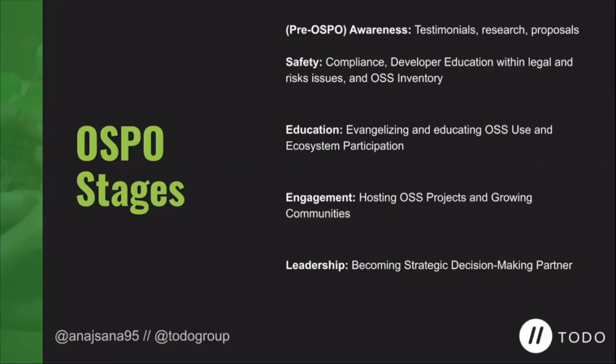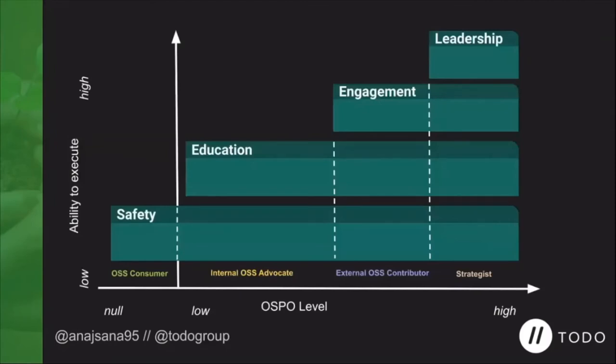Only when we have a safe and supportive environment might we drive more attention to broader engagement and find ways to host open source projects. Finally, in the last stage, the OSPO can become a strategic partner for technology decisions, helping to guide choices and save long-term commitments to projects. If we map these milestones with two variables — the OSPO maturity level and the execution of open source operations — we can visualize these milestones better. Safety remains important across the different OSPO stages, but the goals will differ depending on whether the organization is just a consumer or is actively contributing upstream.